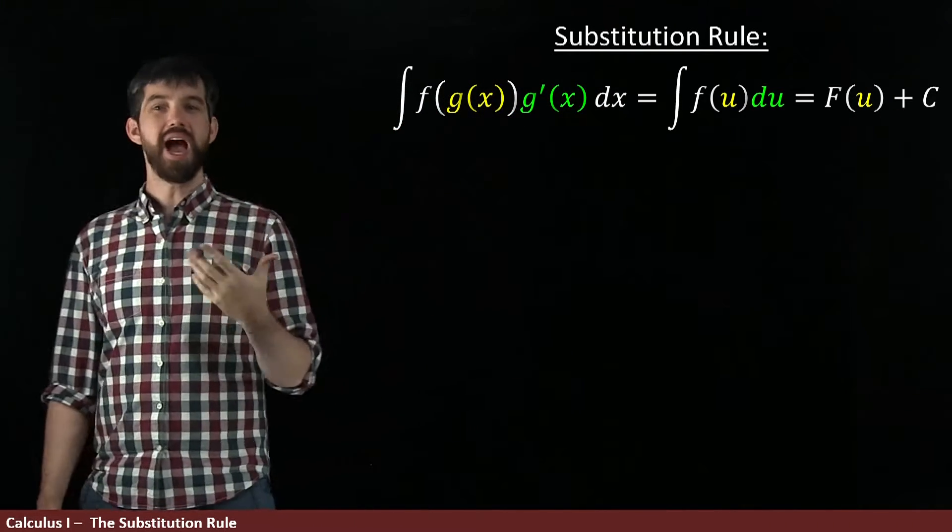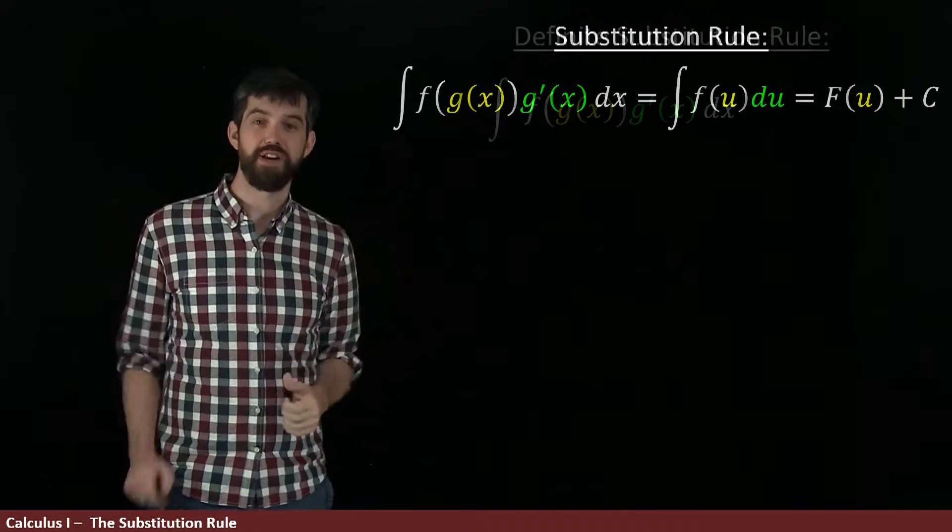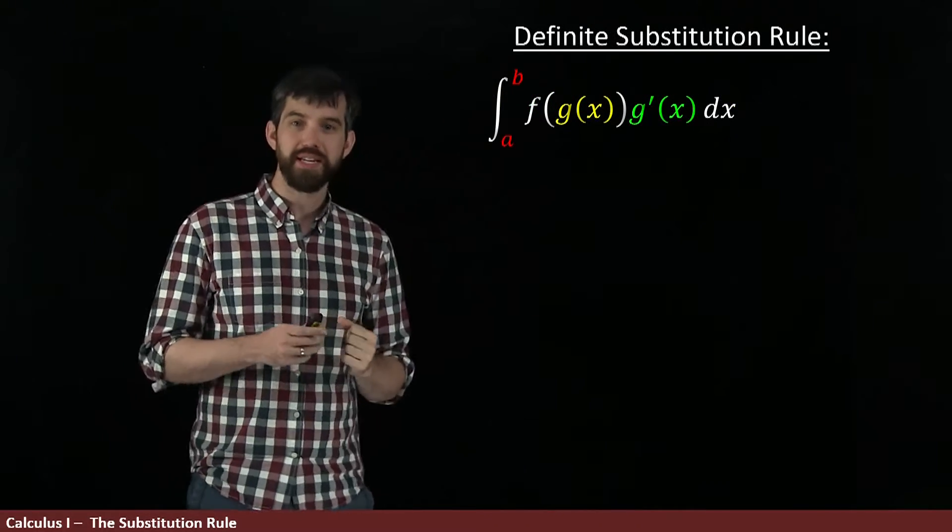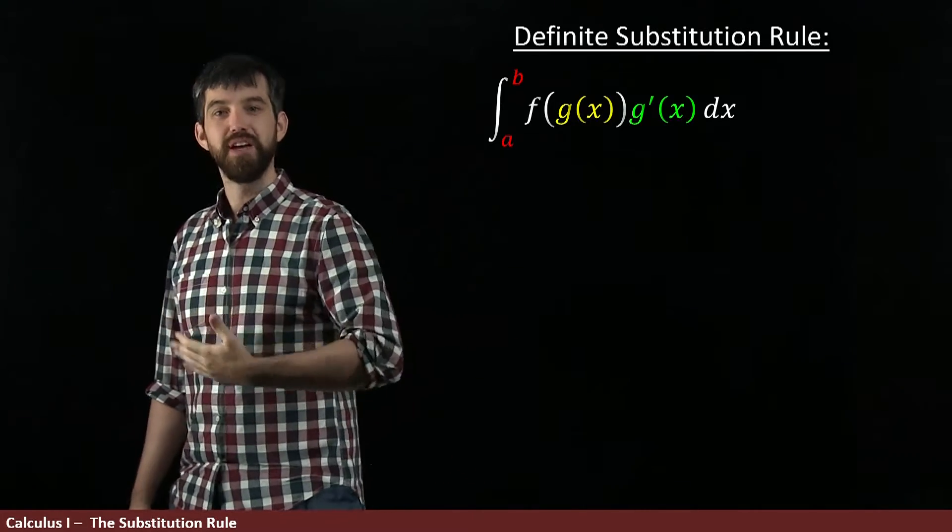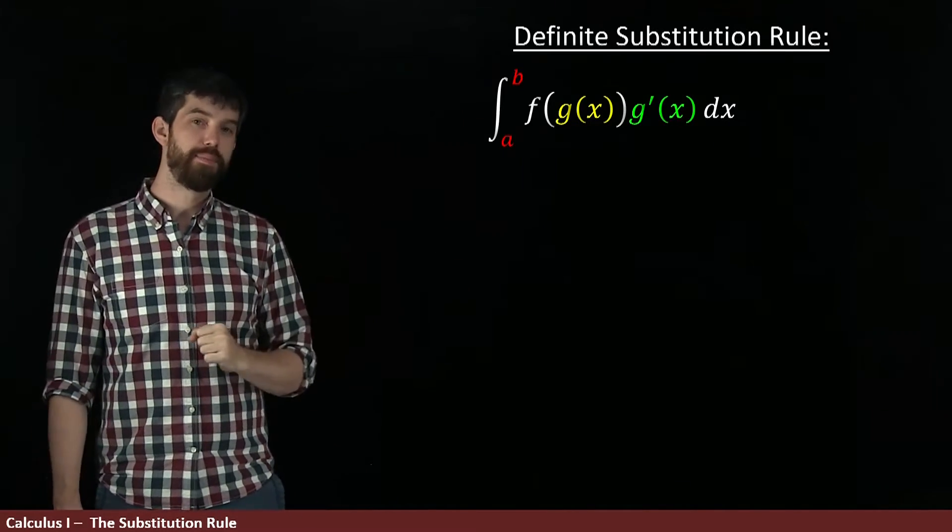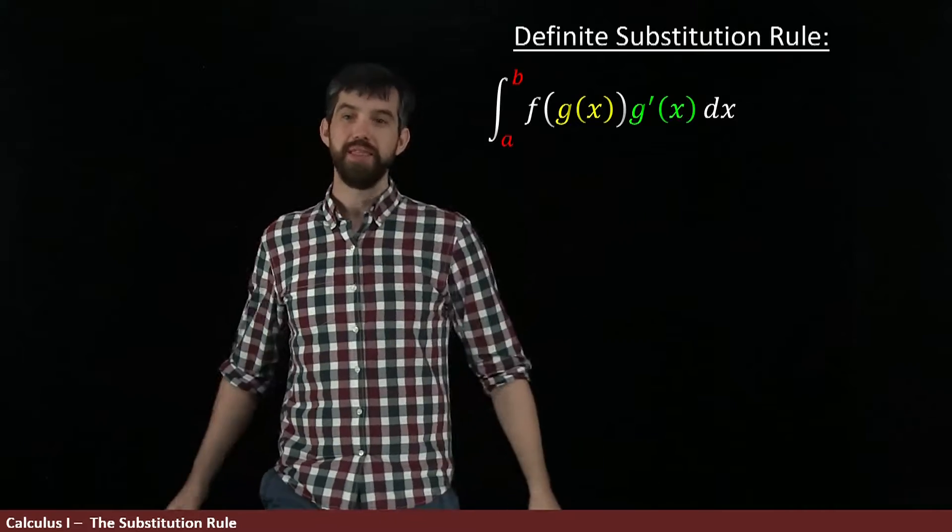But we can do the same kind of thing when it comes to definite integrals. So what I want to consider here is the integral from a to b of the same kind of integrand, f of g times g prime. And I want to figure out what can I do in that scenario.